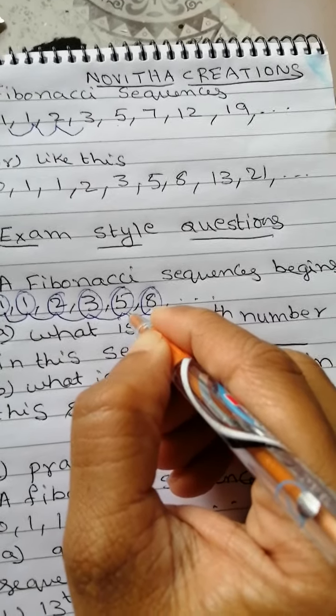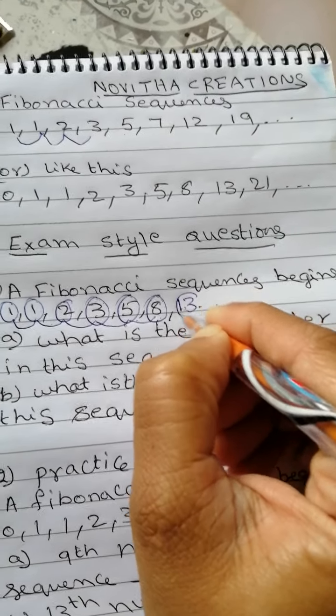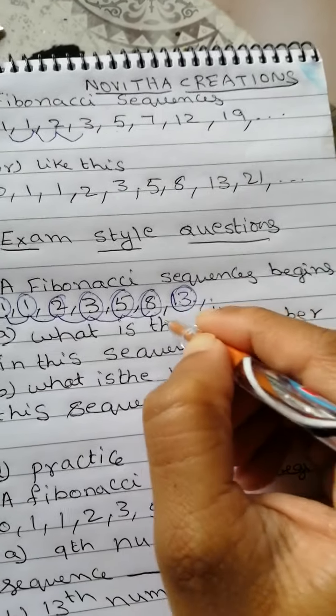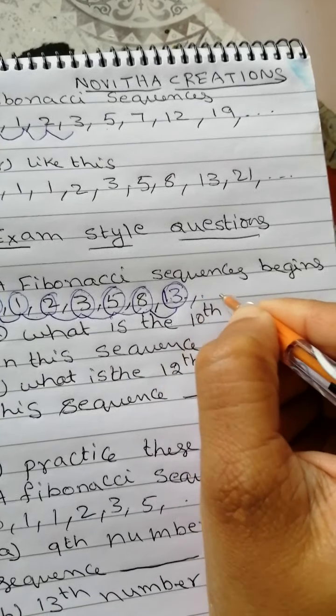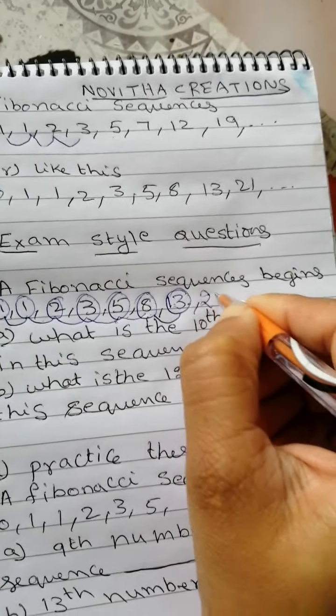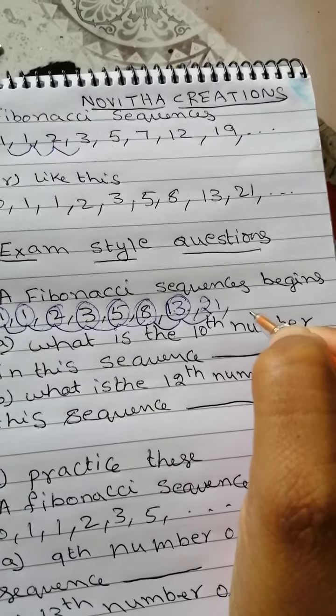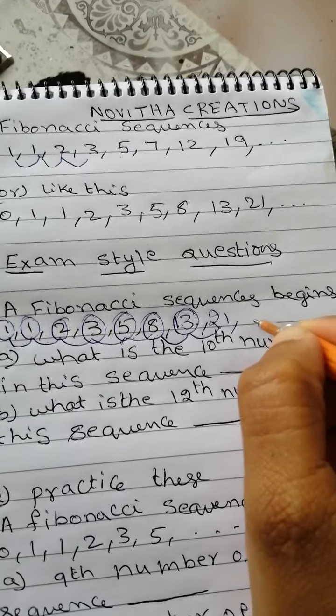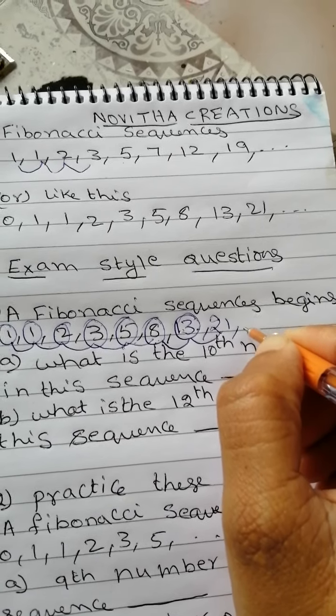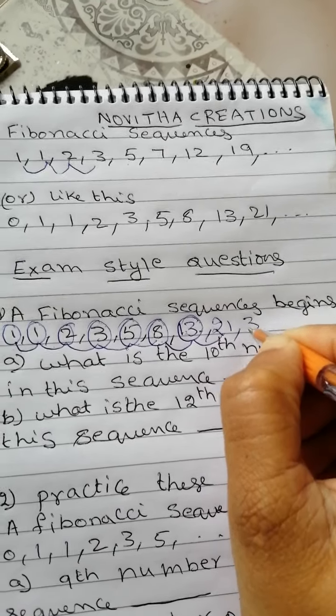To make 7th number, 5 add 8 will give you 7th number. This is 7th number. For 8th number we need to find, 13 add 8 will give you 21. And then 13 add 21 will give you 9th number of the sequence. So this is 34.